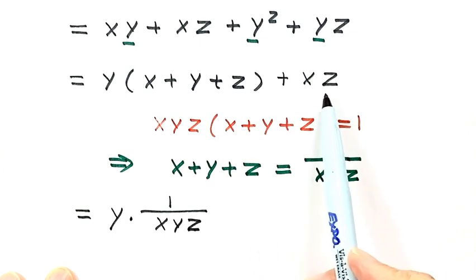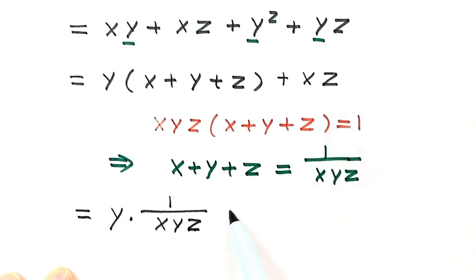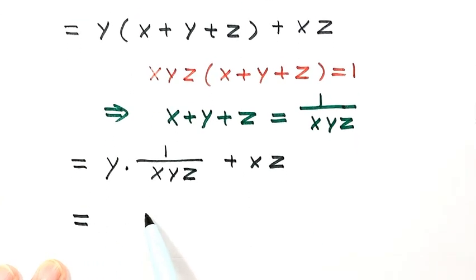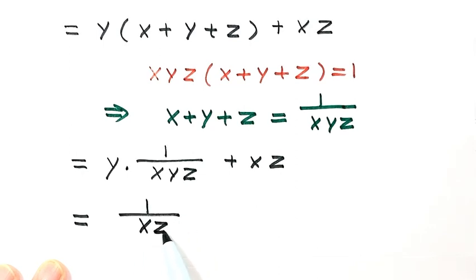Then this part plus xz. Simplifying the first part: y times 1 over xyz equals 1 over xz. So the expression equals 1 over xz plus xz.